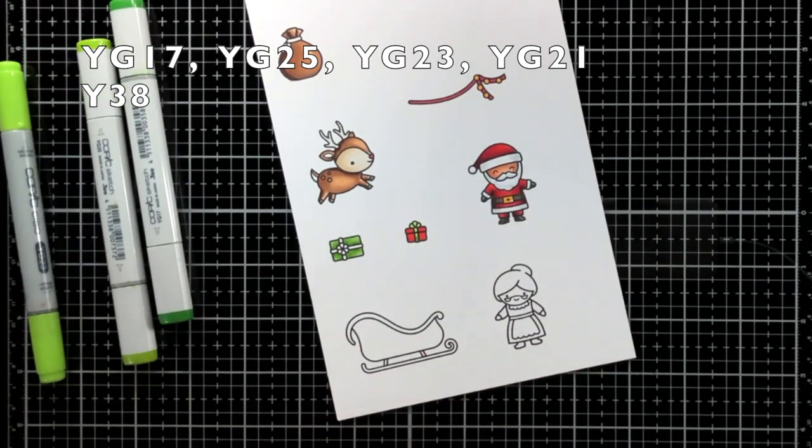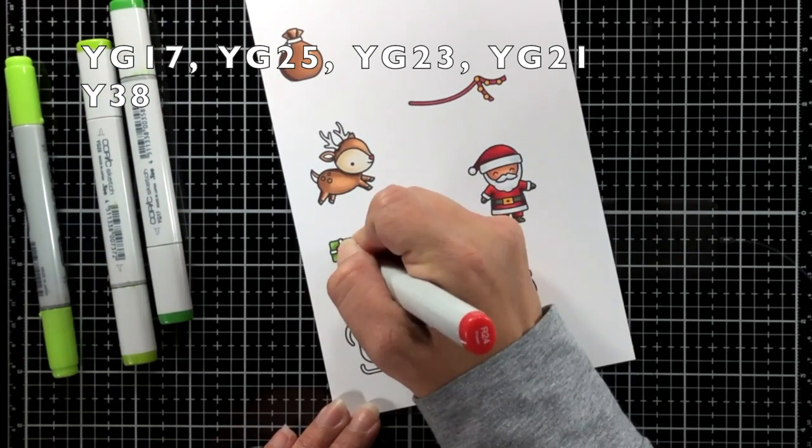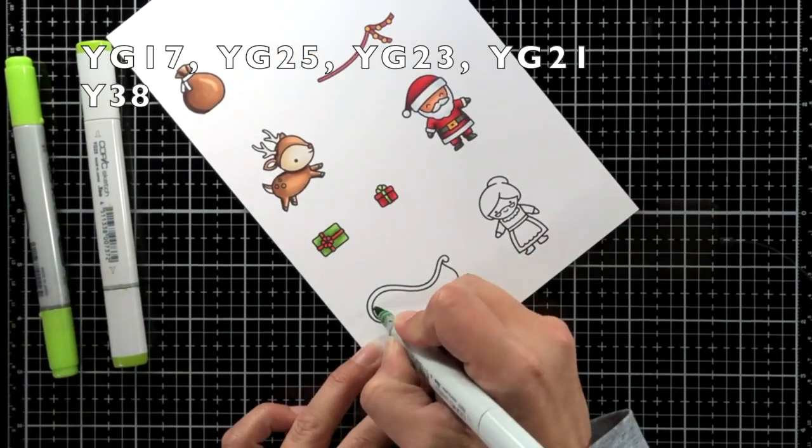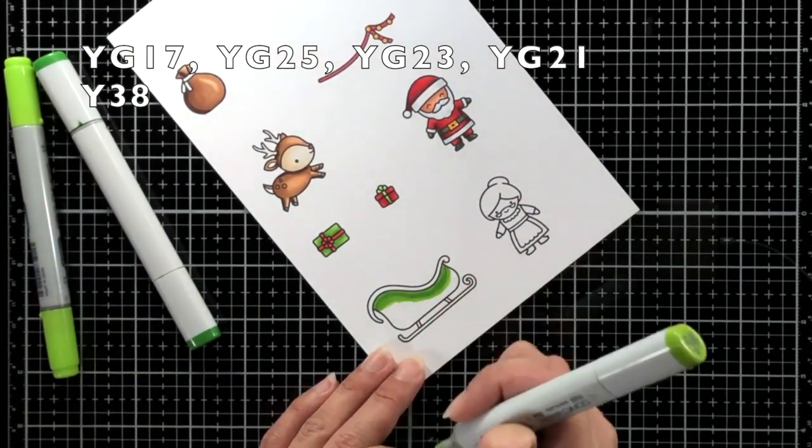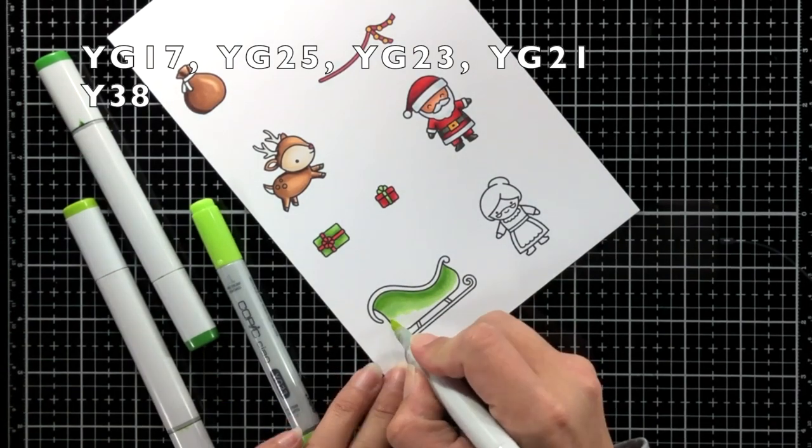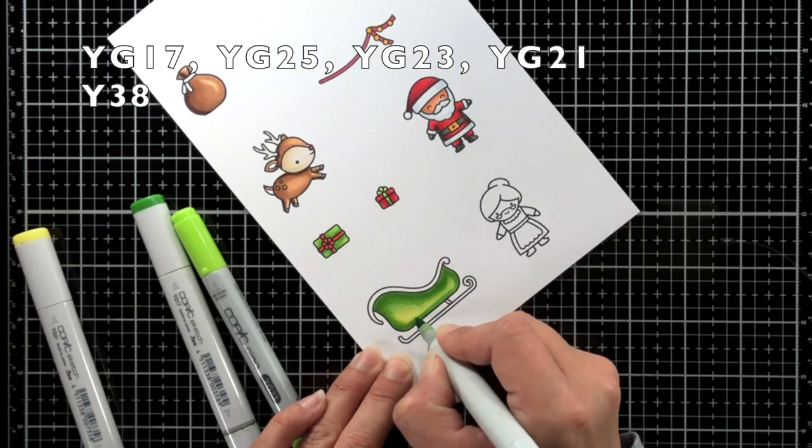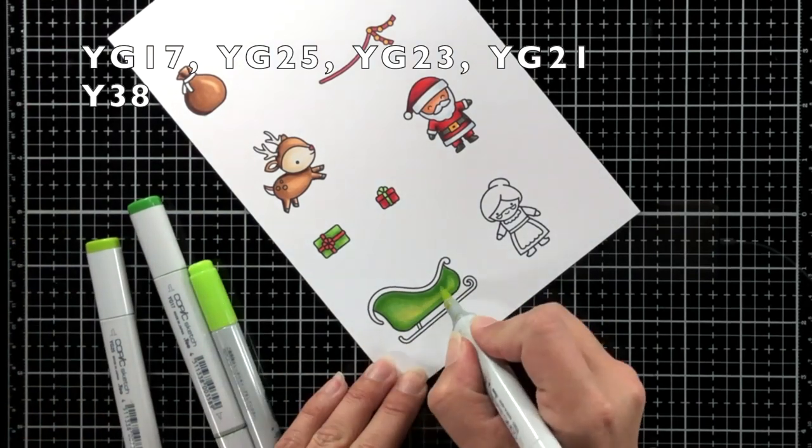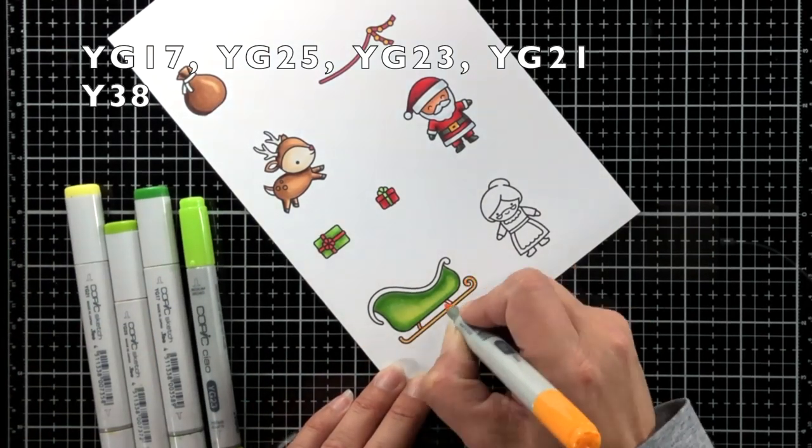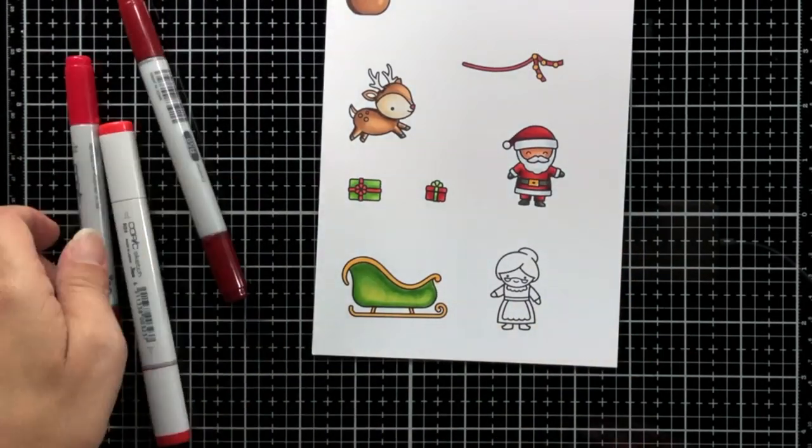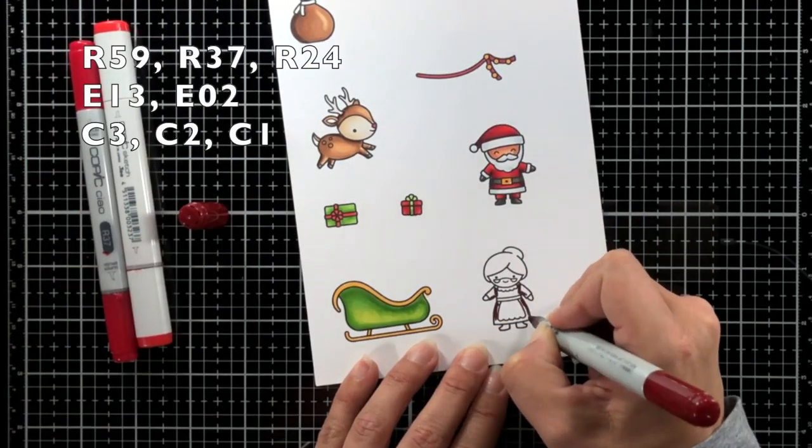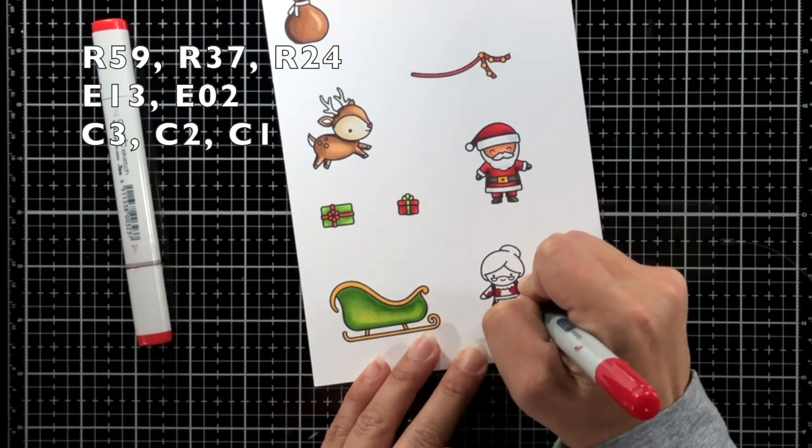Now for the greens I'm going to be using YG17, 25, and 23. On the sleigh here I did add in a YG21 for a nice bright highlight. Now don't mind that the Santa is colored. I forgot I didn't need him on here so I kind of skipped over that part because I will be coloring the Santa later in the video.